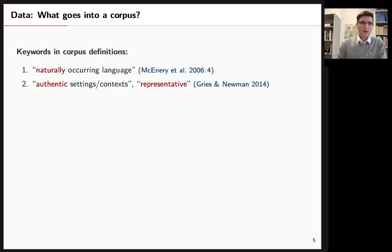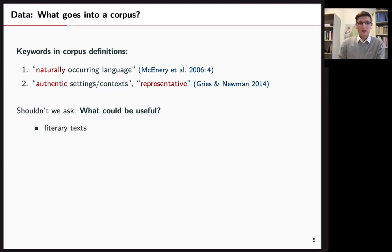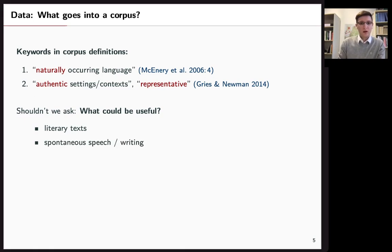So with language data you have to ask what actually goes into a corpus. Some would say it has to be naturally occurring language or aesthetic settings or it has to be representative of the language. But this is actually maybe not what should be asked. The question should be what is useful? What do I need for not just my question but what would anybody else also need? And what is quite clear is that they need literary texts, they are really useful in corpora, also spontaneous speech and writing.